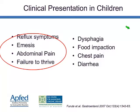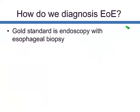This is different from what we see in children, where the most common symptoms are reflux, vomiting, abdominal pain, and failure to thrive. It's not until children are older, in adolescence, that they typically develop more of the adult phenotype — difficulty swallowing and food impaction.